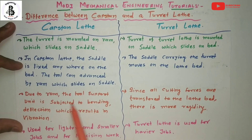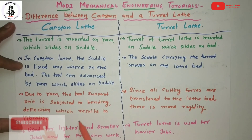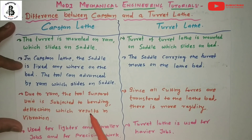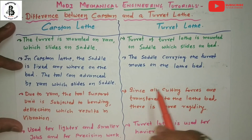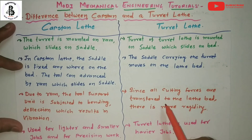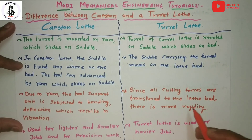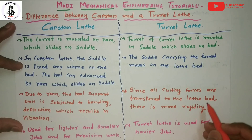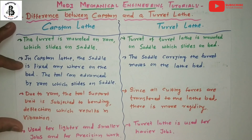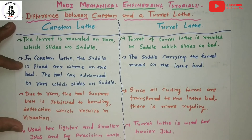Third difference: for the capstan lathe, due to the ram, the tool support unit is subjected to bending deflections, which results in vibrations. In the case of the turret lathe, all cutting forces are transferred directly to the lathe bed, so there is generally more rigidity.